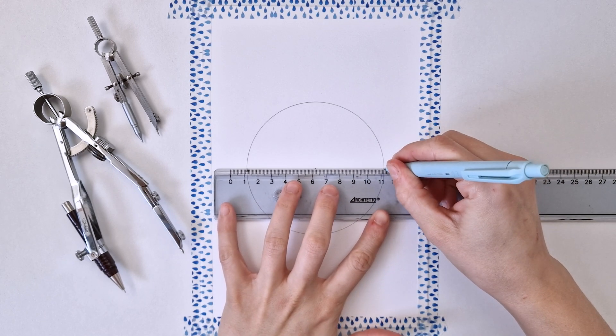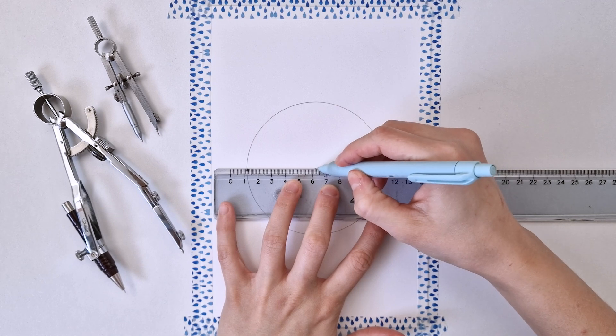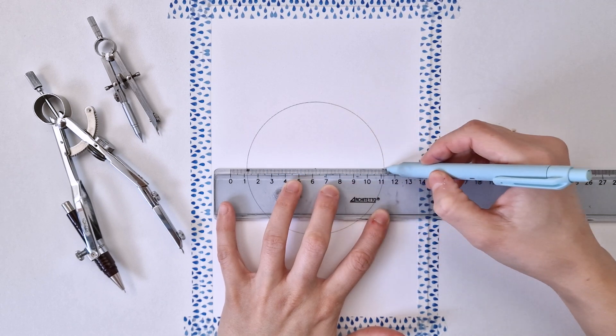You can eyeball it, you can measure the distance, whatever you prefer, just make sure that your horizontal line is passing through the center.